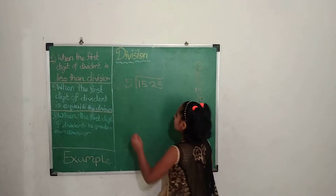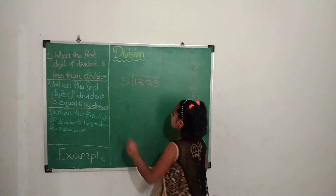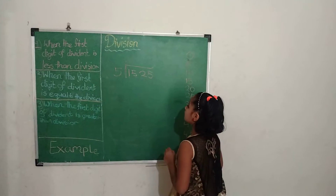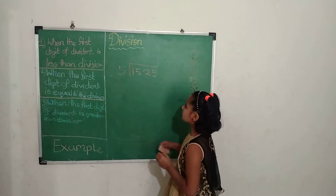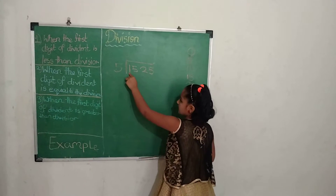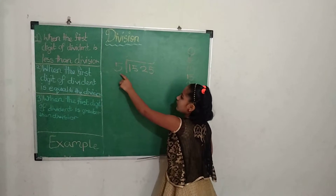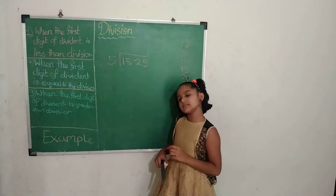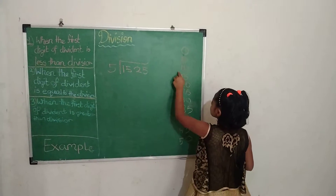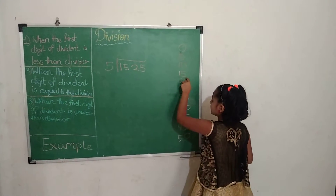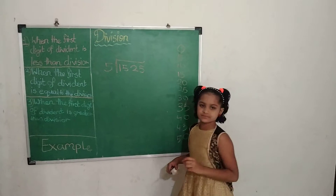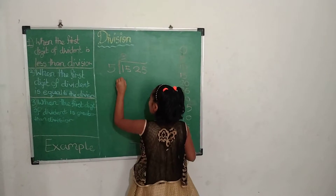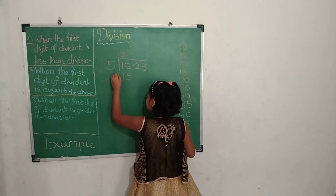Now, 5 is bigger than 1, that's why we don't divide 5 by 1 alone. So we take two digits. In the 5's table, we see 5 threes are 15. So 3 will be written in the quotient and 15 will be written below.